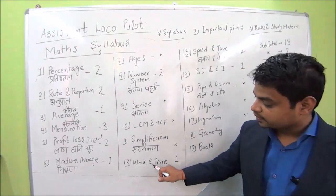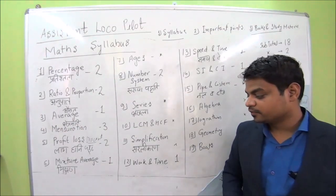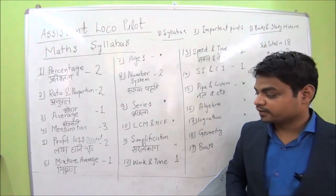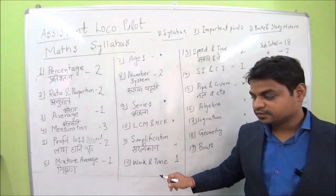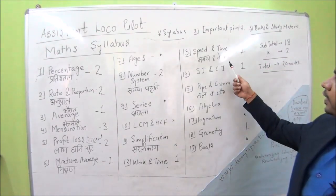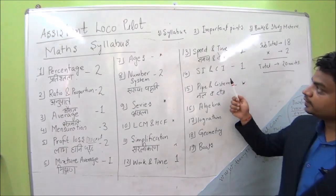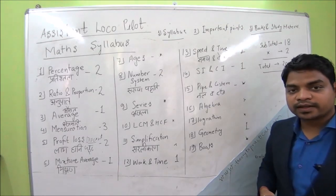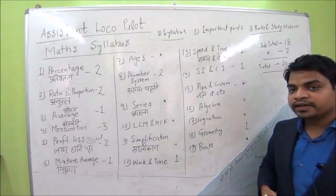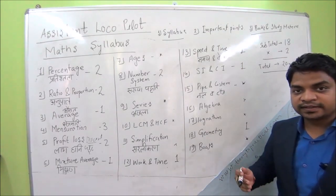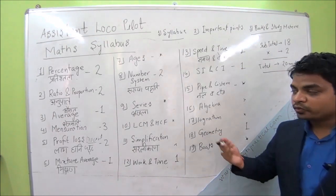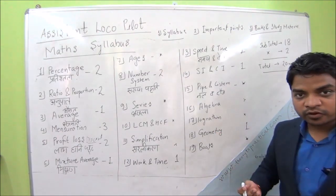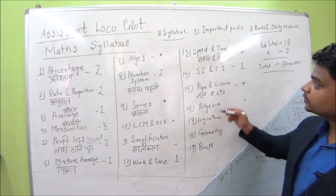Then there is work and time — for example, if 4 workers complete a task in 8 days, how many days will 5 workers take? Those types of questions appear here. Then speed and time — from this 1 question comes. Since this is a railway exam, questions are often railway-based: a train crossing a pole, two trains crossing each other — how much time will it take? Those types of questions appear here.